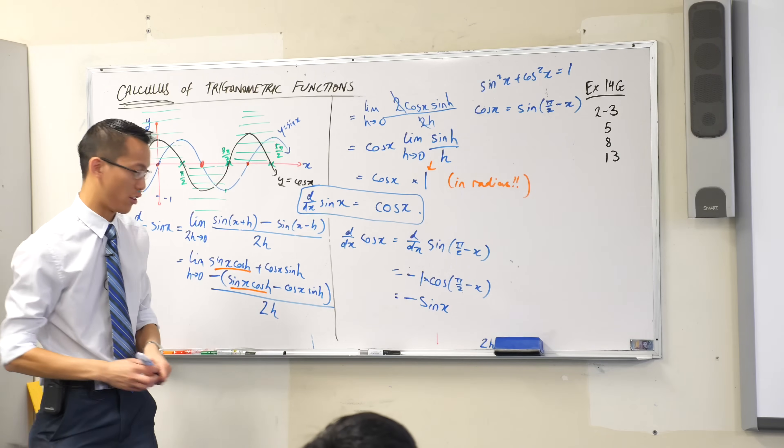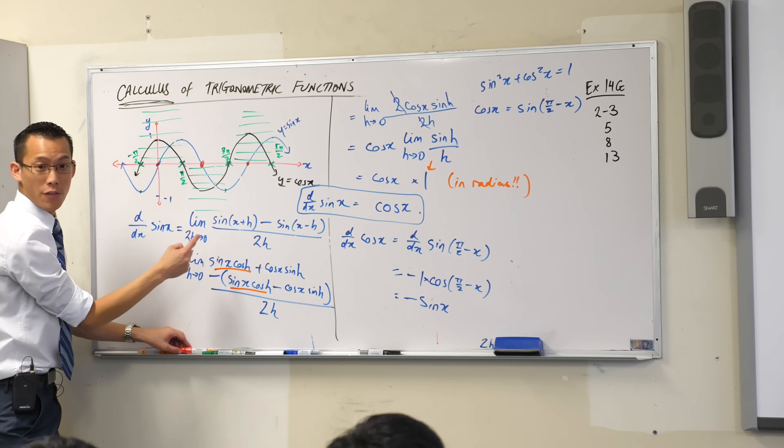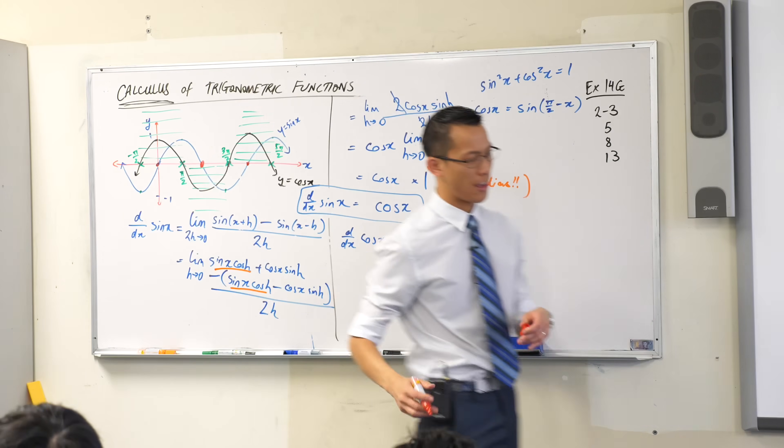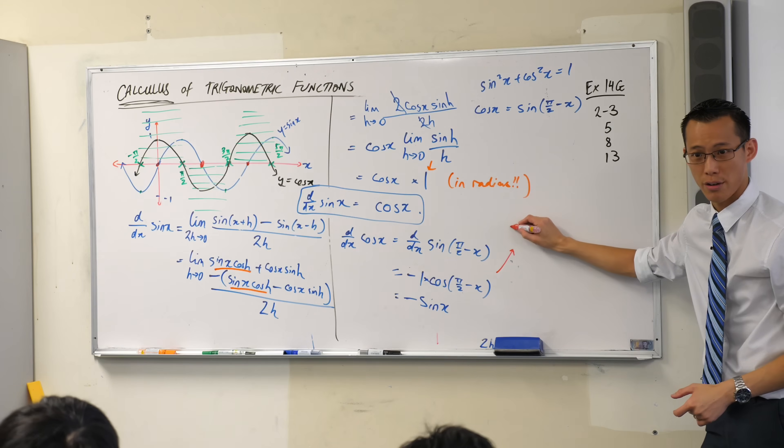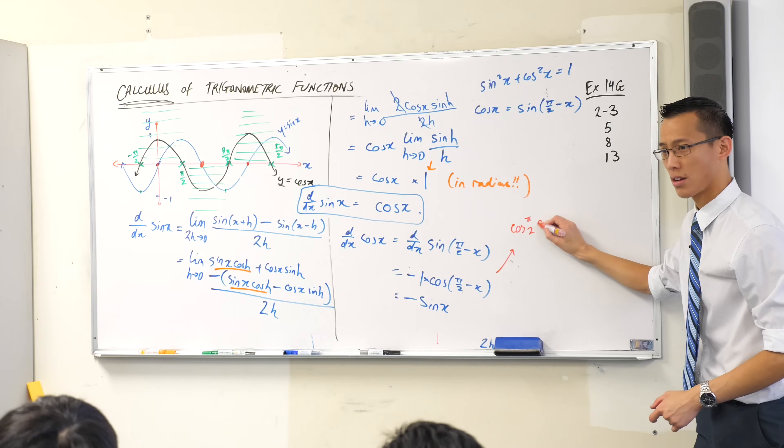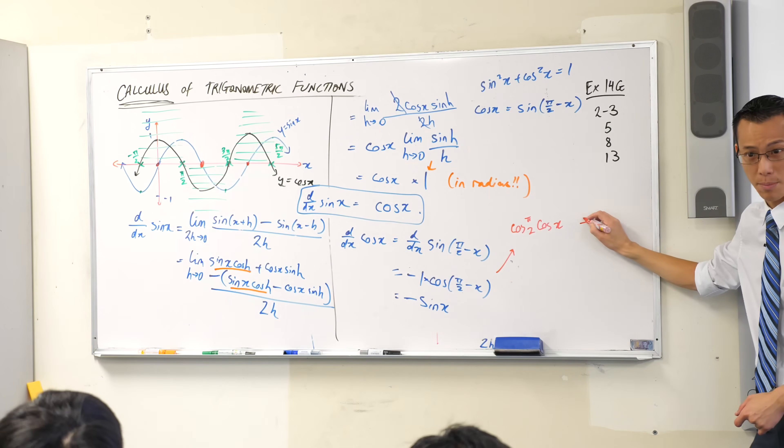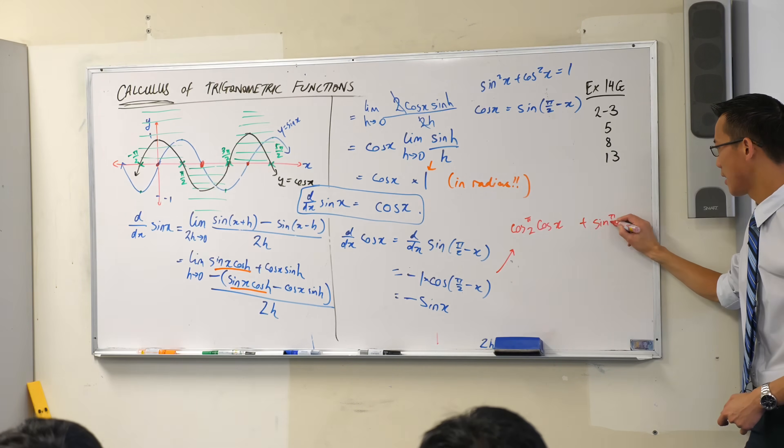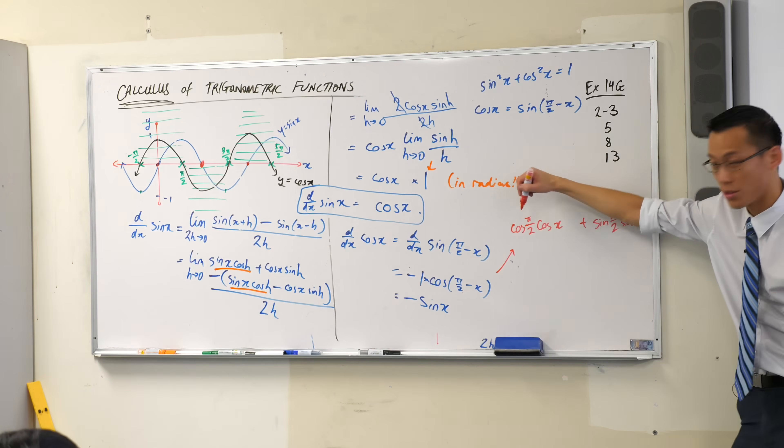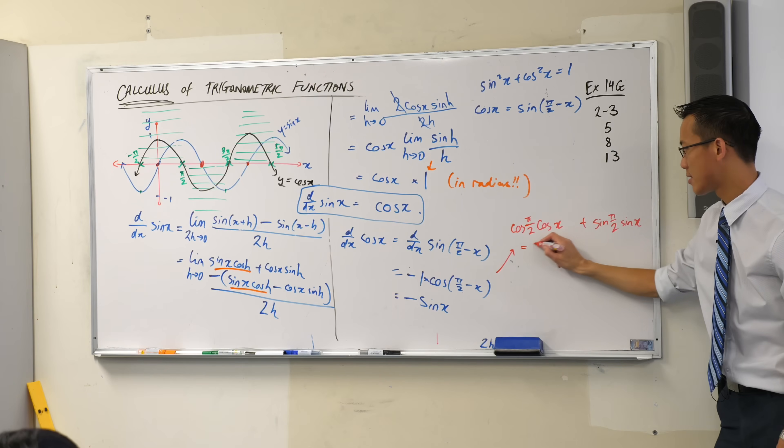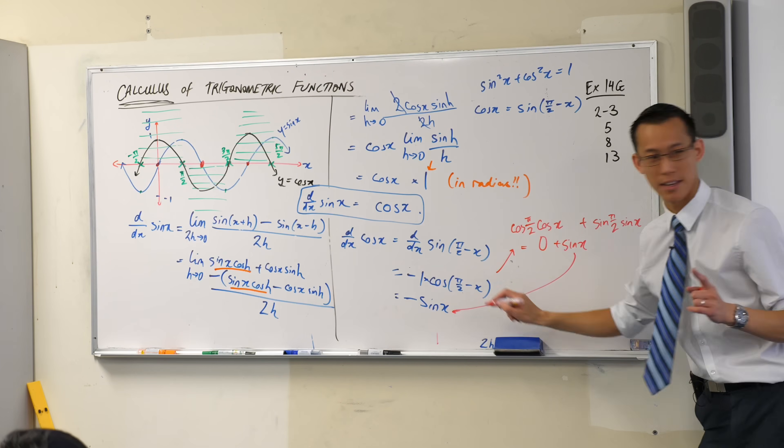If you can't remember that identity, you can go the long way around and you can say, I can do the same expansion here that I did over here. What's the identity for cos a minus b? Pretty sure it's cos a cos b. There's a minus there. So what's in the middle? It's a plus. And then it's sin a sin b. Does it ring a bell? What's cos pi on 2? That's 0. What's sin pi on 2? It's 1. Which is what I said.